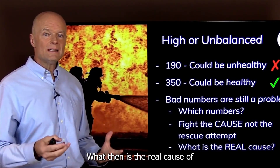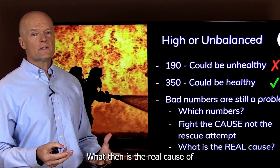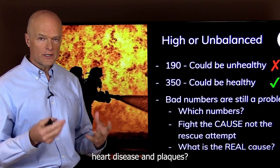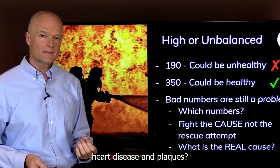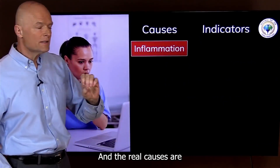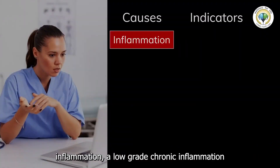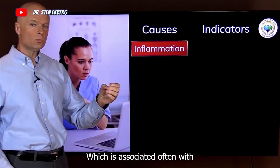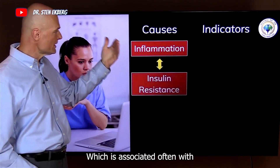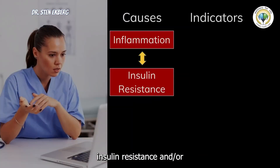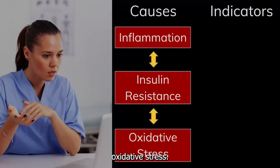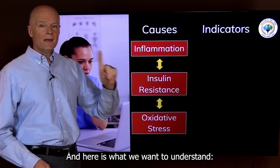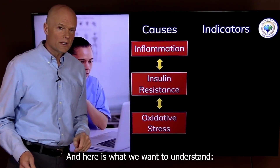What then is the real cause of heart disease and plaques? The real causes are inflammation — a low-grade chronic inflammation — which is associated often with insulin resistance and/or oxidative stress. All three go hand in hand, and here's what we want to understand.